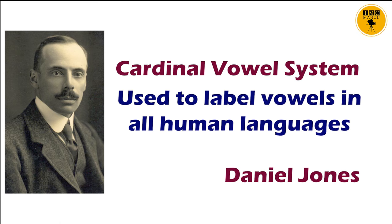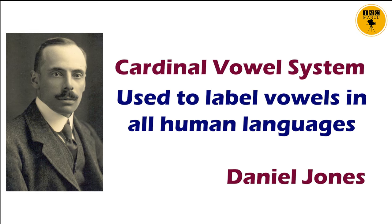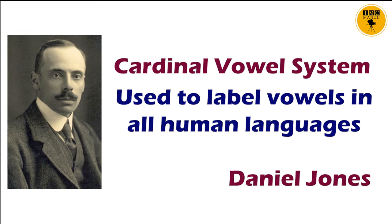Some phoneticians felt that three-term labels were not sufficient, so Daniel Jones proposed a labeling system common to vowels across all human languages. This is referred to as the cardinal vowel system. The cardinal vowel system runs from numbers 1 to 8. Let us quickly look at these cardinal vowel numbers from 1 to 8.